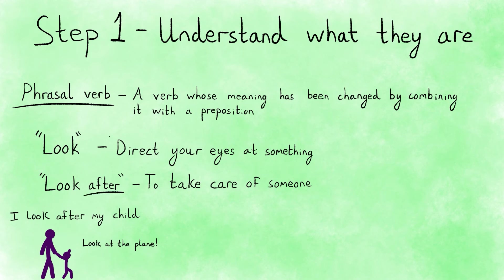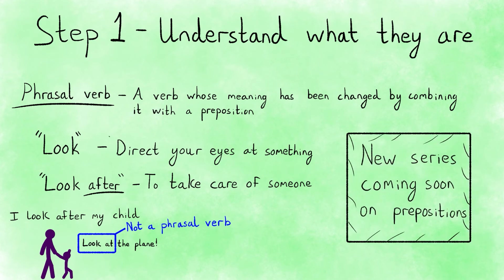If a preposition doesn't change the meaning of the verb, then it's probably not a phrasal verb. For example, look at isn't a phrasal verb. At is just the preposition we use with the verb look when we want to specify the object we're looking at. In another series, we focus on common mistakes with verb prepositions, but in this series we're only focusing on true phrasal verbs.